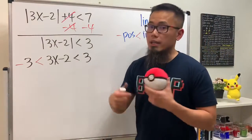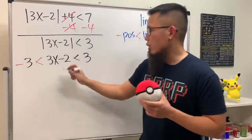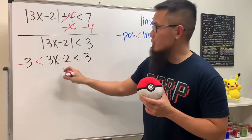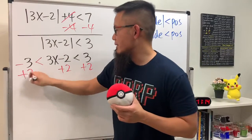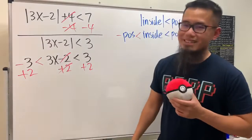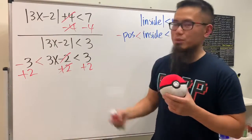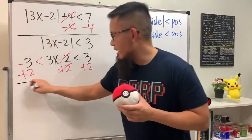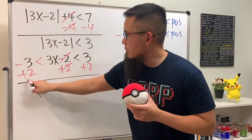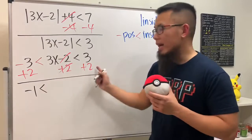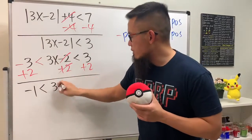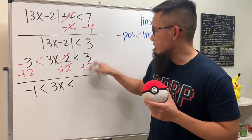From here we can just try to isolate x in the middle. To do so, we have the minus 2, so just add 2 here and do it to everybody on all three sides. Negative 3 plus 2 is negative 1, this stays the same because we're just adding 2, and then we have 3x, and this is less than 5.